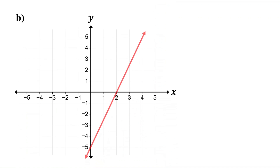Find the x- and y-intercepts. To find the x-intercept, first locate where the line crosses the x-axis, then identify the coordinates of this point. The x-value is 2. Remember, the y-value at the x-intercept is 0. Therefore, the x-intercept is the point (2, 0).